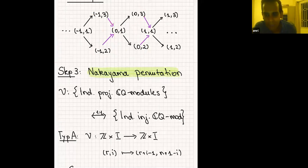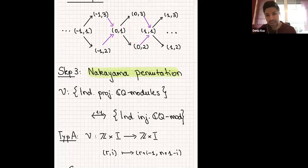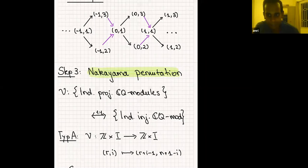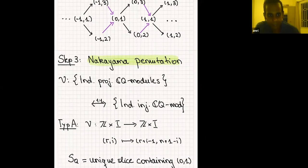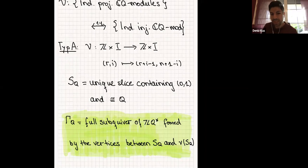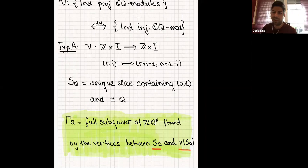You always begin with a sink, then reverse the arrows at that sink, and the next number must again be a sink. The Auslander-Reiten quiver is obtained as the full subquiver of this infinite quiver formed by the vertices between S_Q and ν(S_Q).